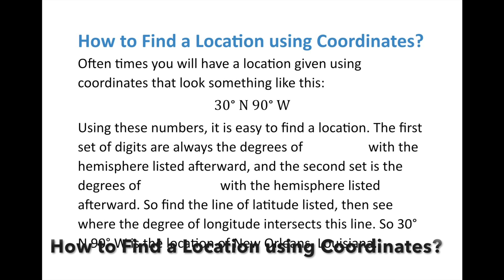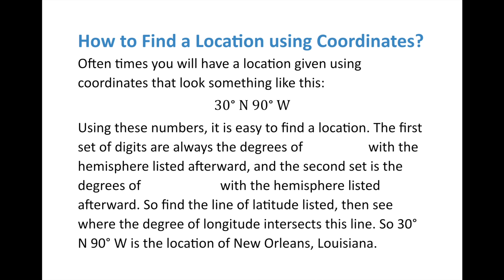So how do you find a location using coordinates? You could ask Siri, but you could just use a map and figure it out. Oftentimes a location using coordinates looks something like this: 30 degrees north, 90 degrees west. It's just like a Cartesian plane — those are the coordinates and that's where you put the dot. A location is at the intersection of lines of latitude and longitude. The first set of digits are always the latitude, with the hemisphere listed afterward — N for north, S for south. The second set of degrees is longitude, with the hemisphere listed afterward: east or west. So 30 degrees north, 90 degrees west means this location is in the northern hemisphere and the western hemisphere.